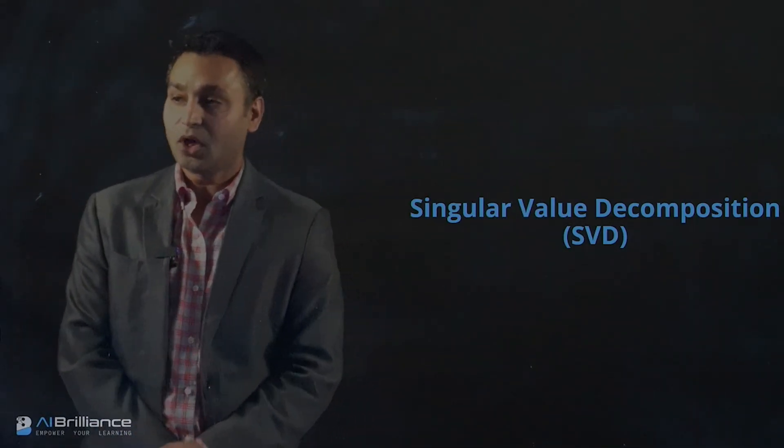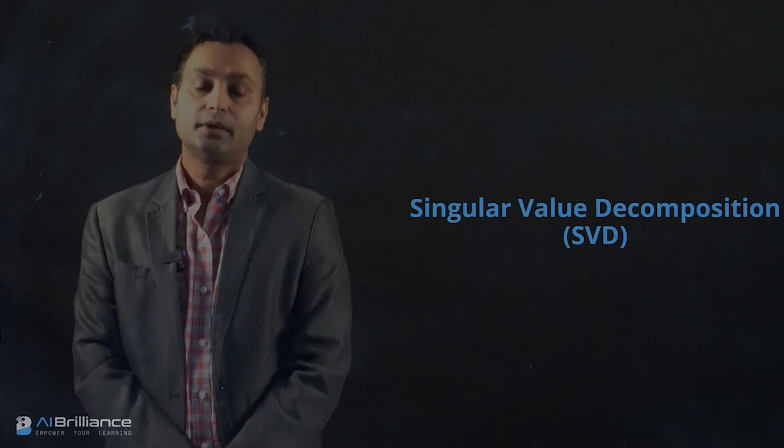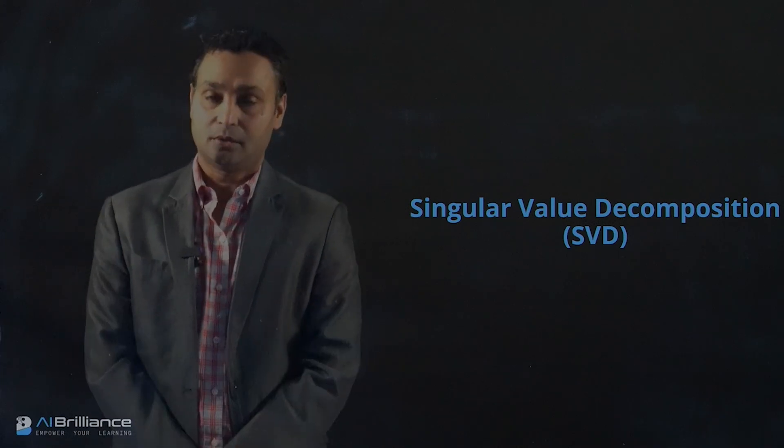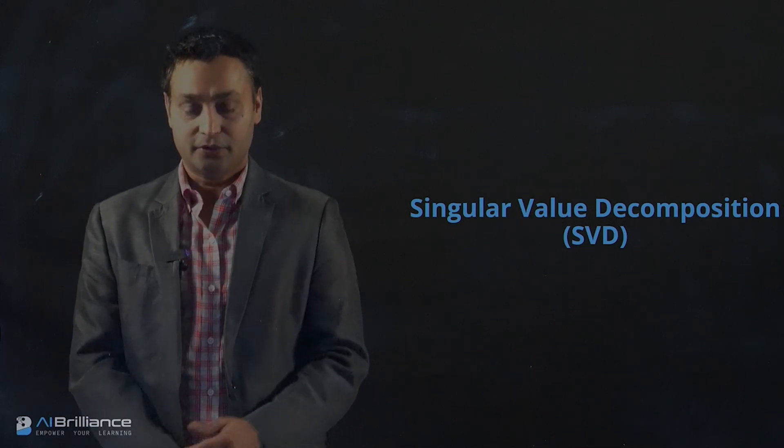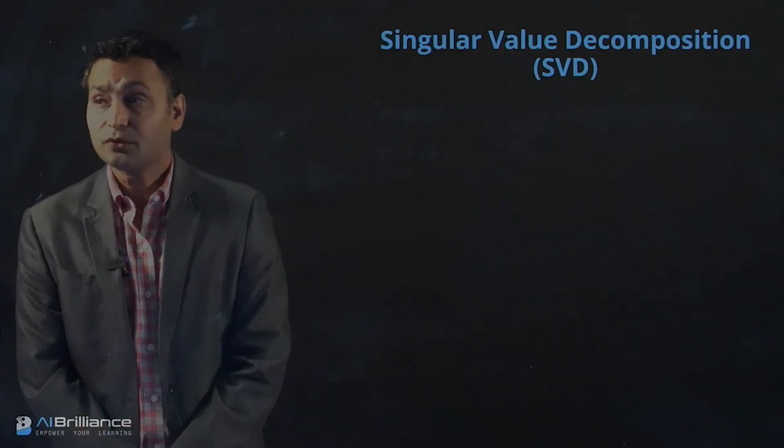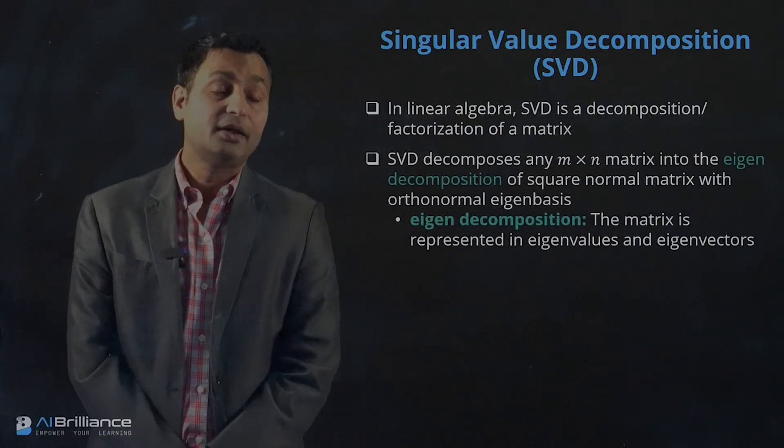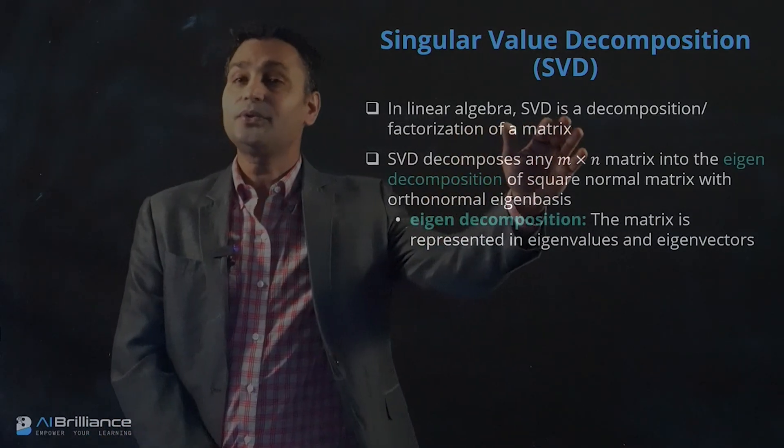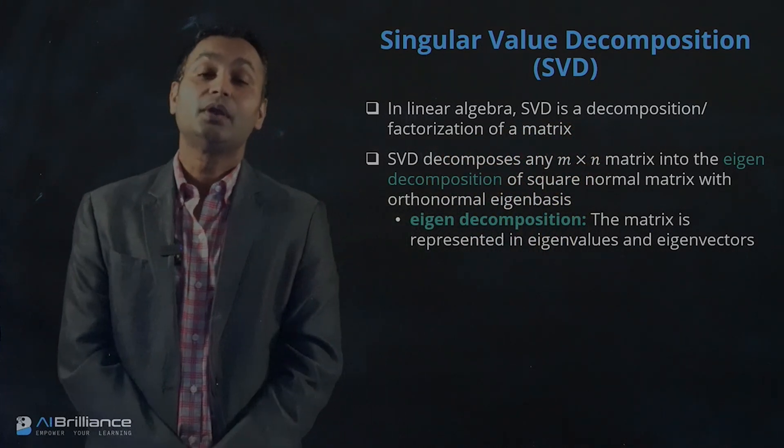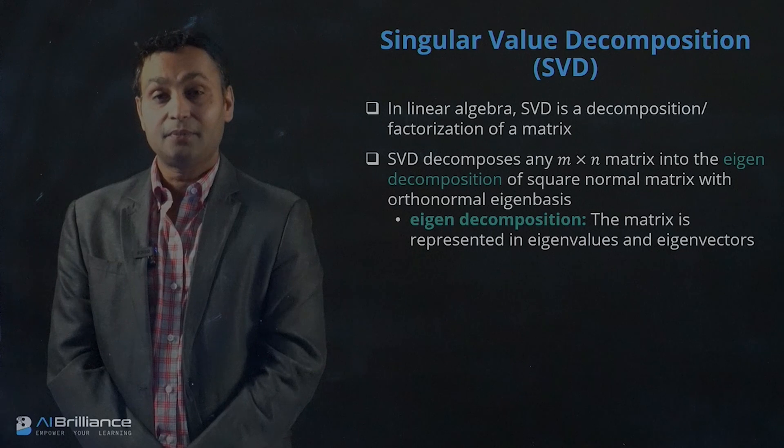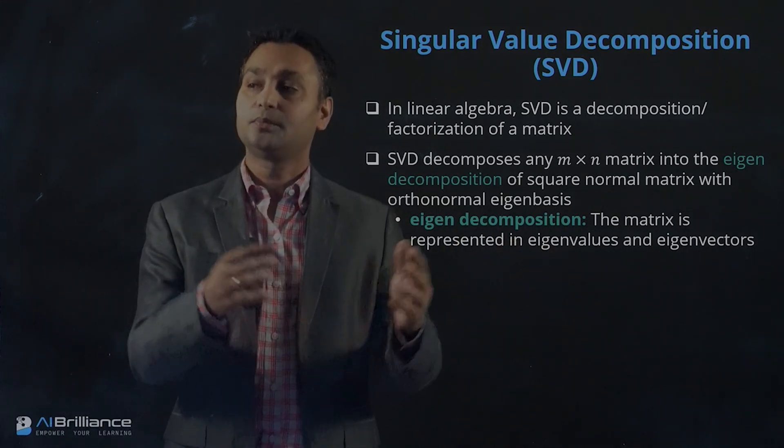Let's talk about Singular Value Decomposition or SVD, which is basically a matrix decomposition technique. When we talk about singular value decomposition in linear algebra, SVD is essentially a decomposition or factorization of a matrix. In other words, you can take a matrix and write that matrix as a product of a set of other matrices—that's the decomposition or factorization of a matrix.